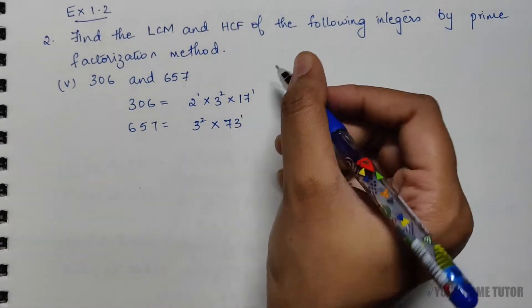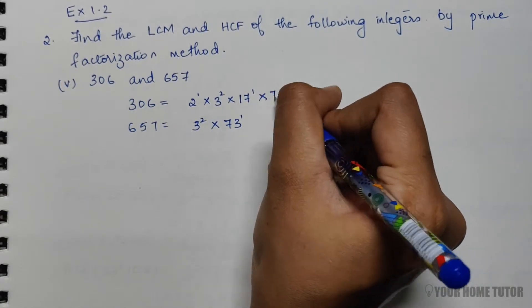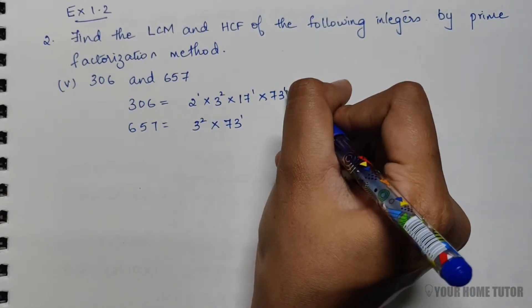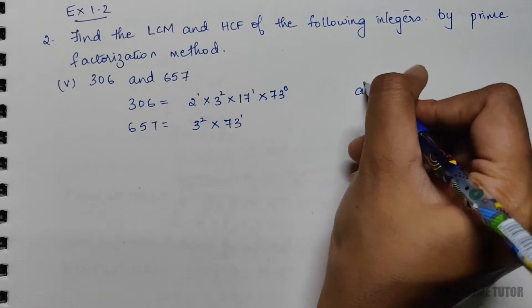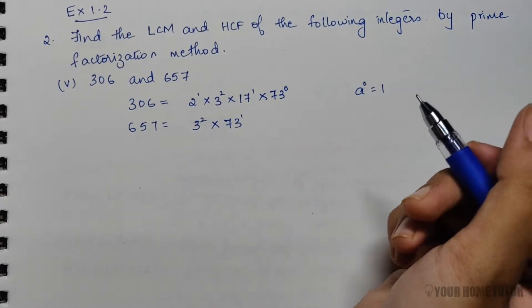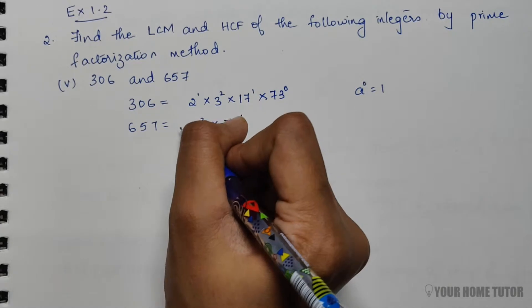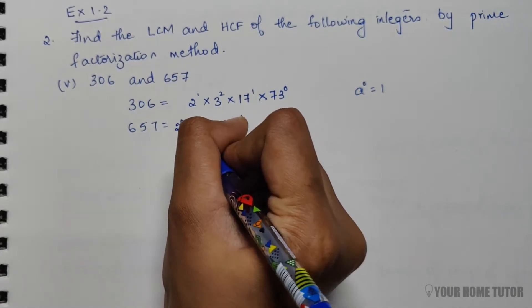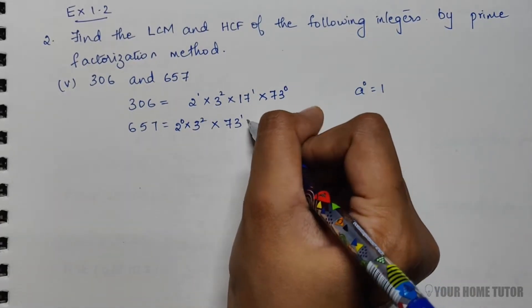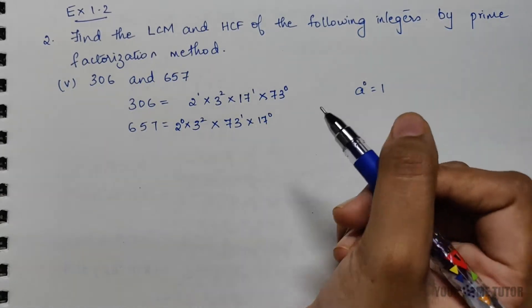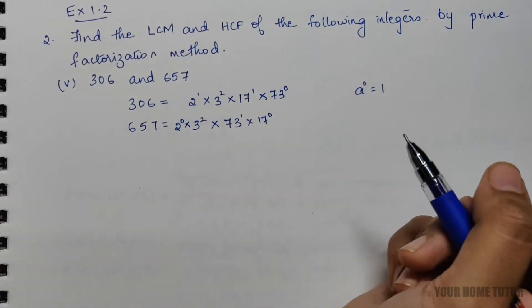So here we can include 73^0, since we know that a number to the power of 0 is equal to 1. And here 2^0 and 17^0.